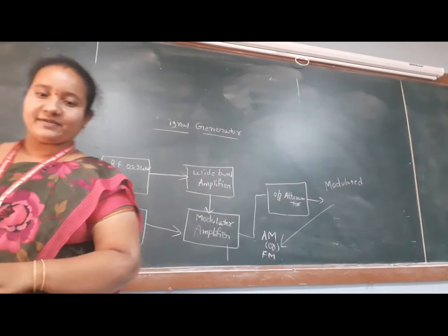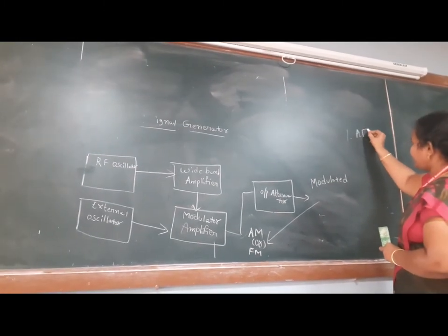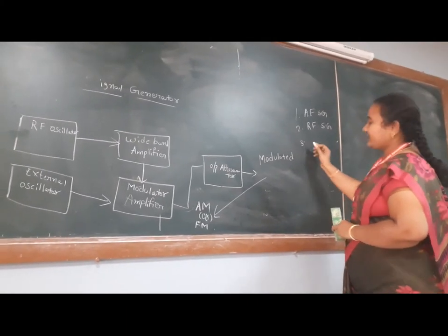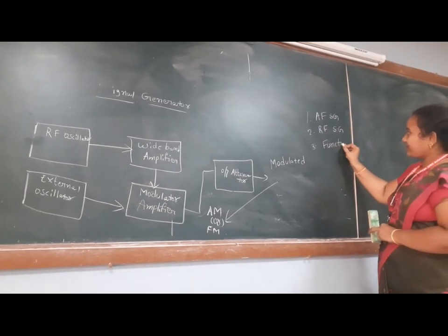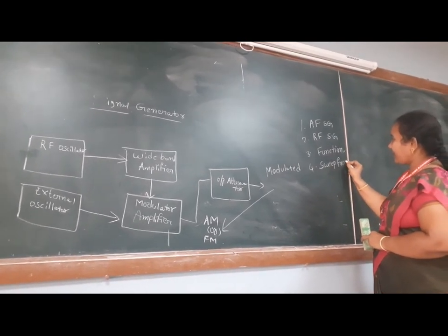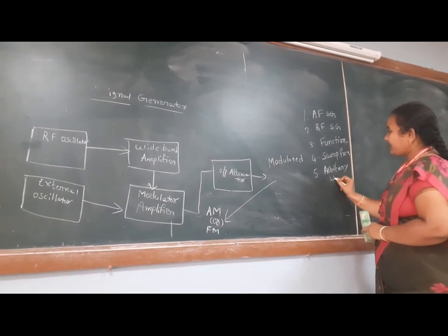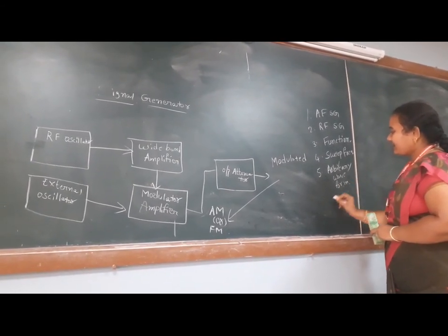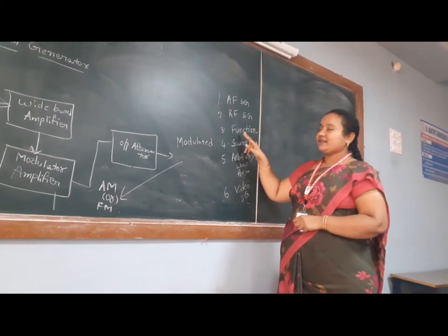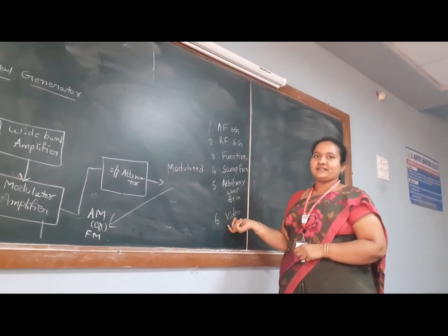There are many types of signal generators. The types are: first, AF signal generator; second, RF signal generator; third, function generator; fourth, sweep frequency generator; fifth, arbitrary waveform generator; and sixth, video signal generator.